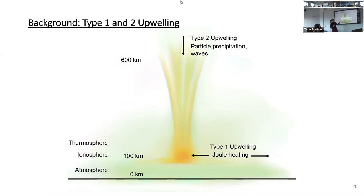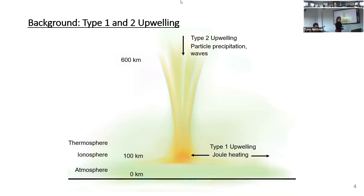Type 1 upwelling is not what we're focusing on today, but just to mention it: if this is our atmosphere, type 1 upwelling is Joule heating, which happens at lower altitudes. A lot of us know what Joule heating is. The type I'm here to study is type 2 upwelling, which is specifically related to particle precipitation — electron precipitation and field-aligned currents are associated with this type of upwelling.